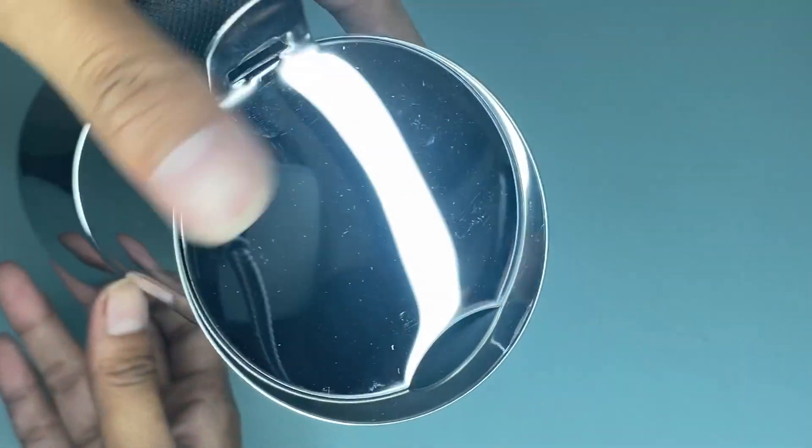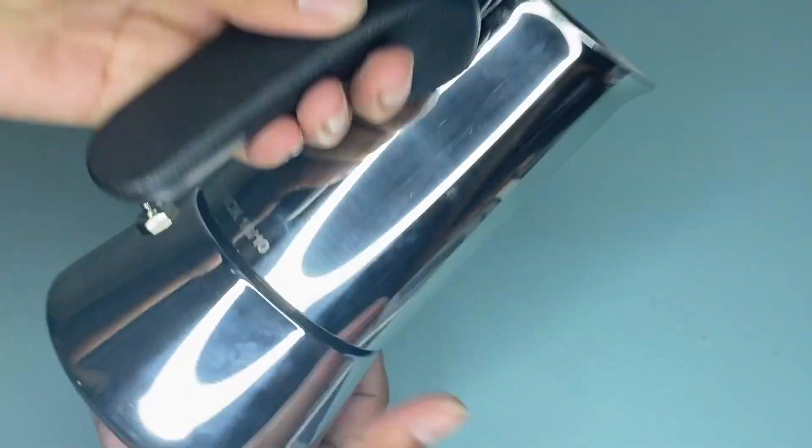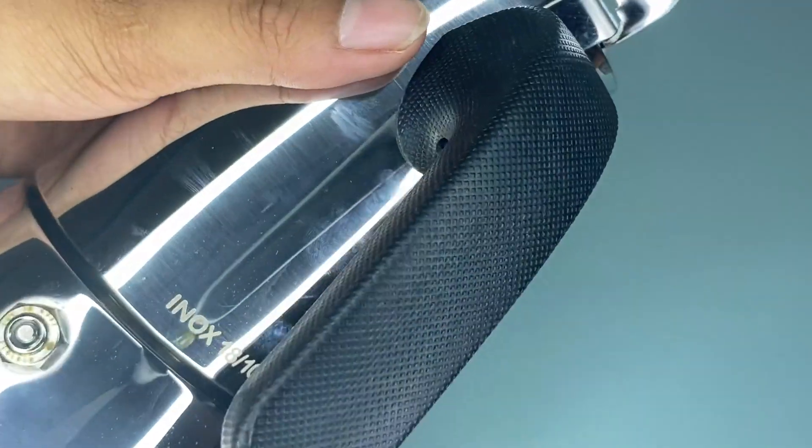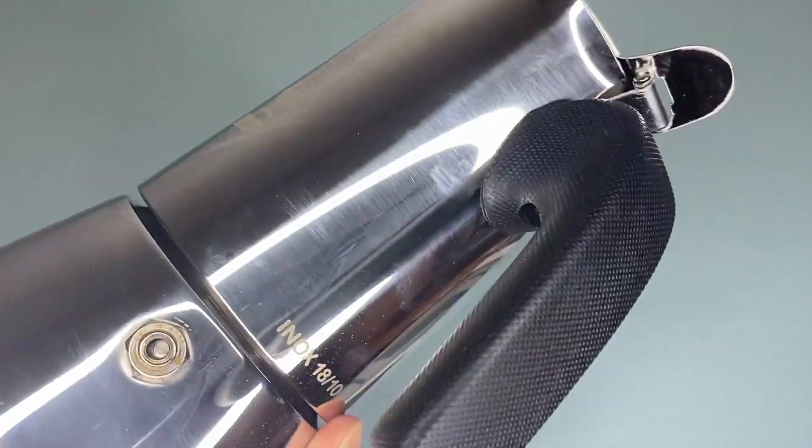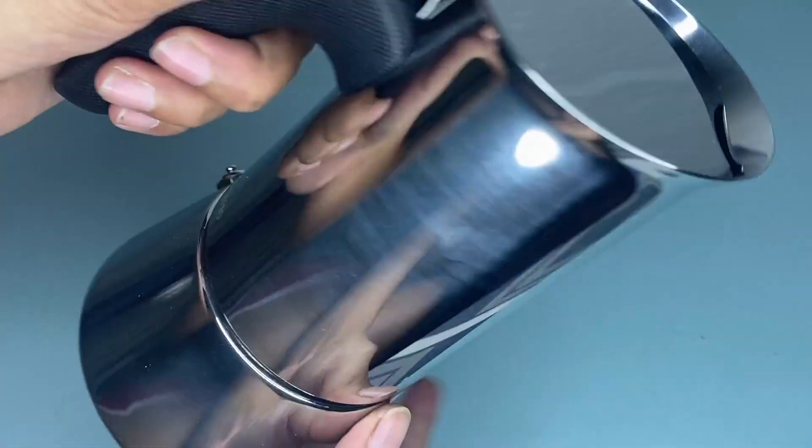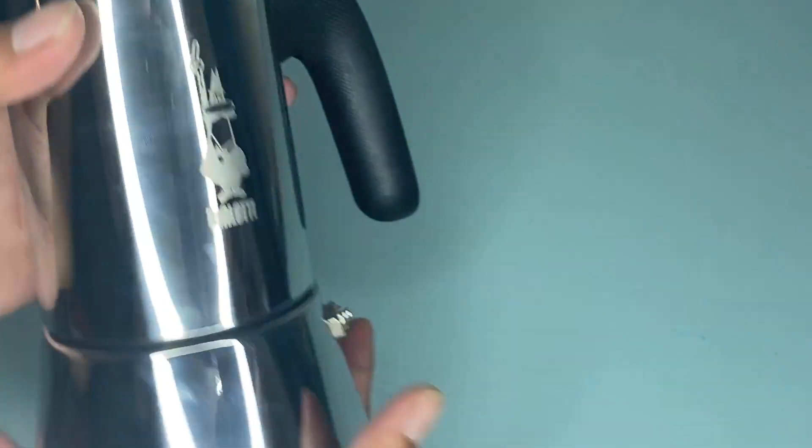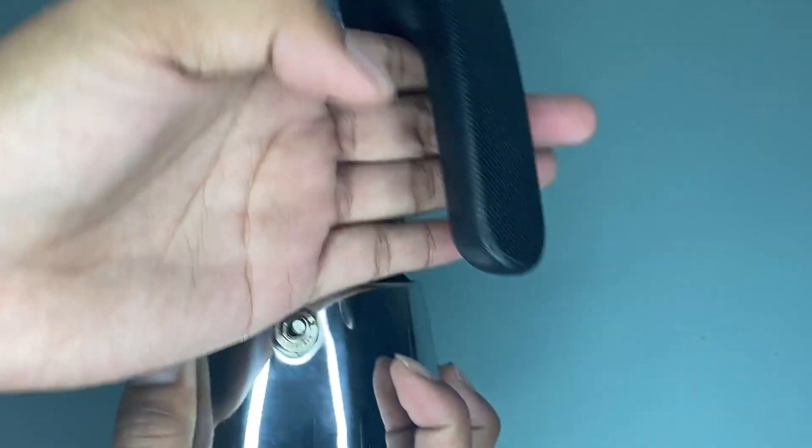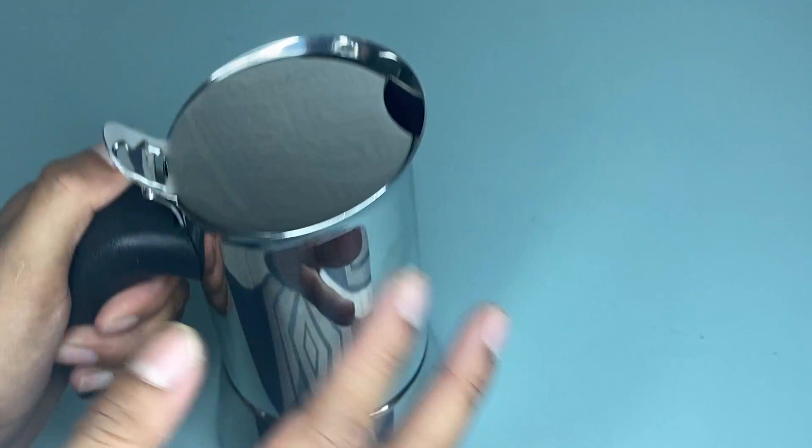Before using this coffee maker for the first time, it's a good idea to wash all the parts in hot water first. This Bialetti Venus is not dishwasher safe, so it is recommended that you throw away the first three brews.